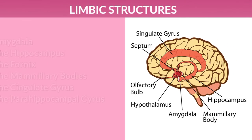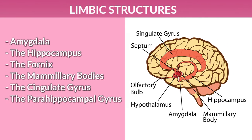The Limbic structures conventionally include the amygdala, the hippocampus, the fornix, the mammillary bodies, the cingulate gyrus, and the para-hippocampal gyrus.